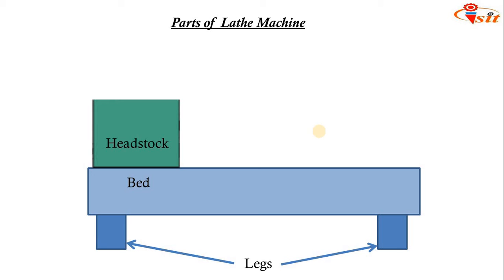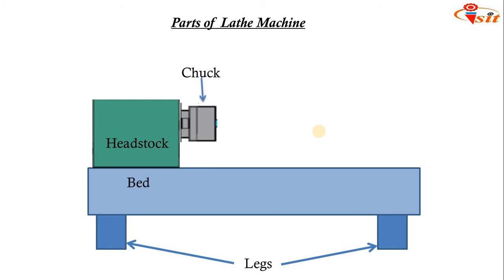The headstock material is nickel-chromium steel. On this headstock, the chuck is kept — there are different types: three-jaw chuck and four-jaw chuck. In that chuck we hold the work piece tightly. Whenever we give the rotational motion to the work piece, it is given through the chuck — the driving mechanism in the headstock gives the rotational motion to the work piece through this chuck.